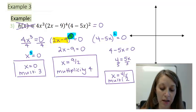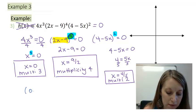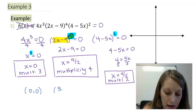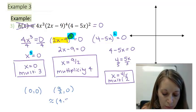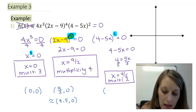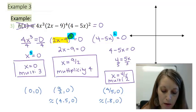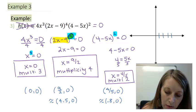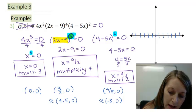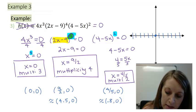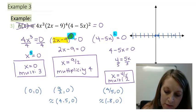In my third example, I'll give the ordered pairs: (0, 0), then (9/2, 0) — approximately (4.5, 0) in decimal — and (4/5, 0), approximately (0.8, 0). So I have x-intercepts at the origin, very close to it at 0.8, and at 4.5.